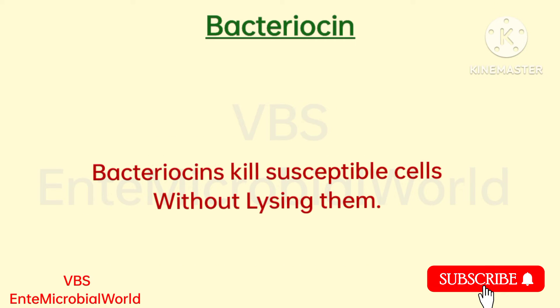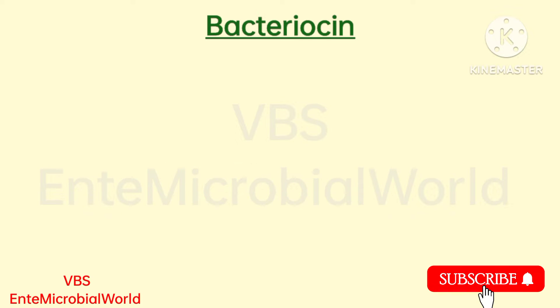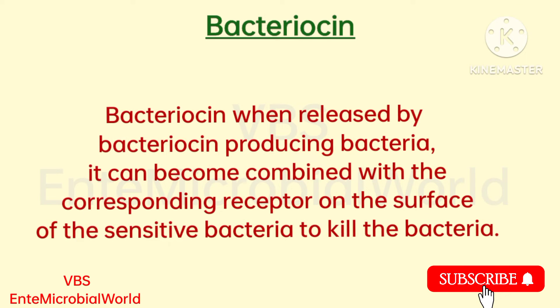Bacteriocins kill susceptible cells without lysing them. When released by bacteriocin-producing bacteria, bacteriocin can become combined with the corresponding receptor on the surface of the sensitive bacteria to kill them.